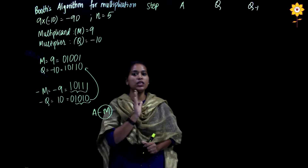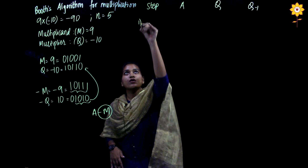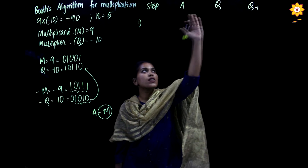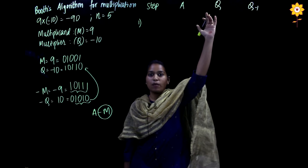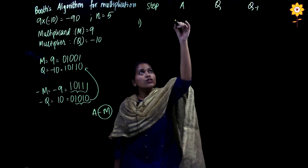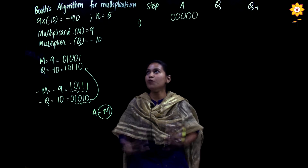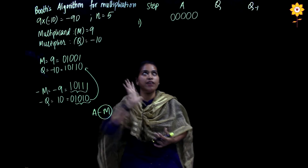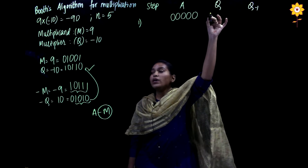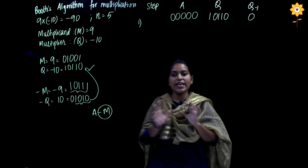Once the number representations are ready, we start Booth's algorithm. With register size 5 we perform 5 steps. First, fill all the registers. We place the accumulator A (initially all zeros: 00000), then the Q register (our multiplier, which is minus 10: 10110), and then Q minus 1, which is a 1-bit register initially equal to 0.